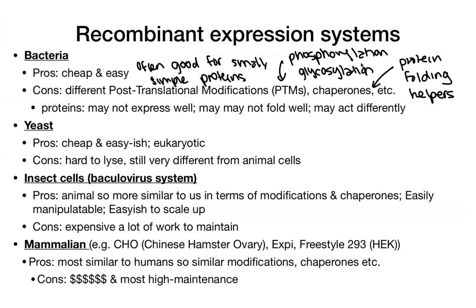If you need something more eukaryotic, the next step up is yeast cells. These are still relatively cheap and easy, but they have some cons — they're hard to lyse and are still quite different from animal cells.